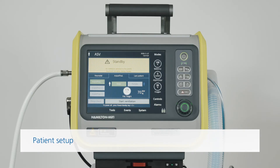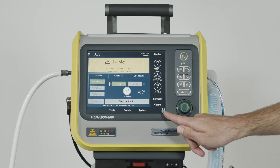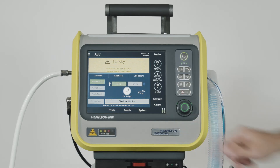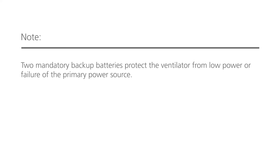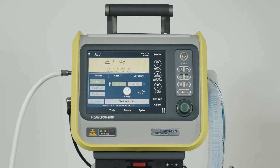Before you connect a new patient to the ventilator, make sure there will be enough power during ventilation. Check the icons in the bottom right corner. The green part of the battery symbol shows you how much of the battery is charged. We recommend that the batteries are fully charged before you start ventilation.